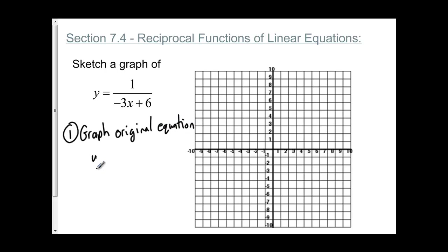My original equation is going to be the denominator y equals negative 3x plus 6. I'm going to start the function at positive 6, with a slope of negative 3, so I'm going to go down 3 over 1 repeatedly. So now I have my linear function drawn.